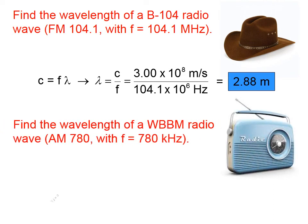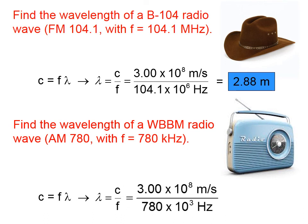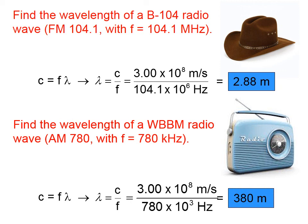Suppose we have an AM radio wave. AM radio waves are not in megahertz, but are in kilohertz. This problem is essentially like the other, except instead of substituting 10 to the sixth, we're substituting 10 to the third — taking the SI prefix kilo out and putting what it means, 10 to the third. We can see that AM radio waves have a much longer wavelength than FM.